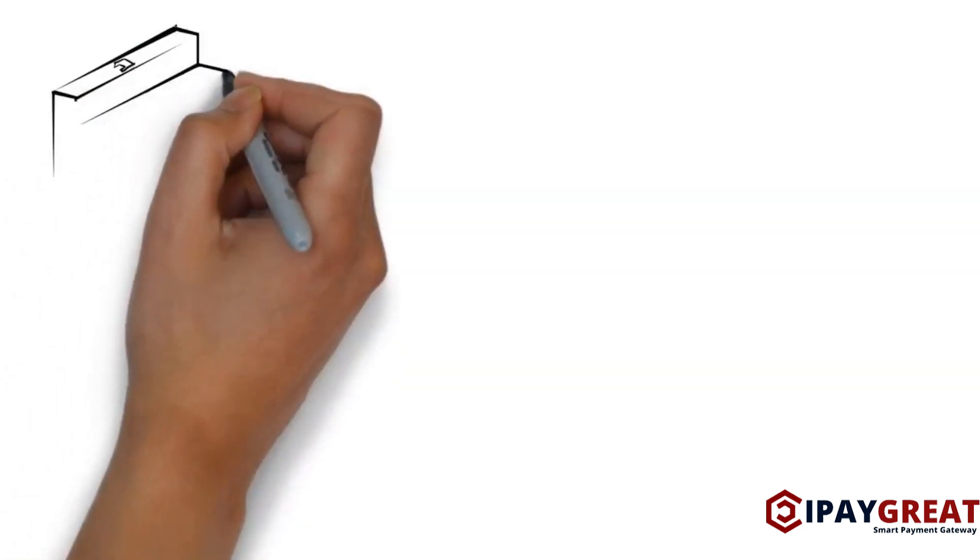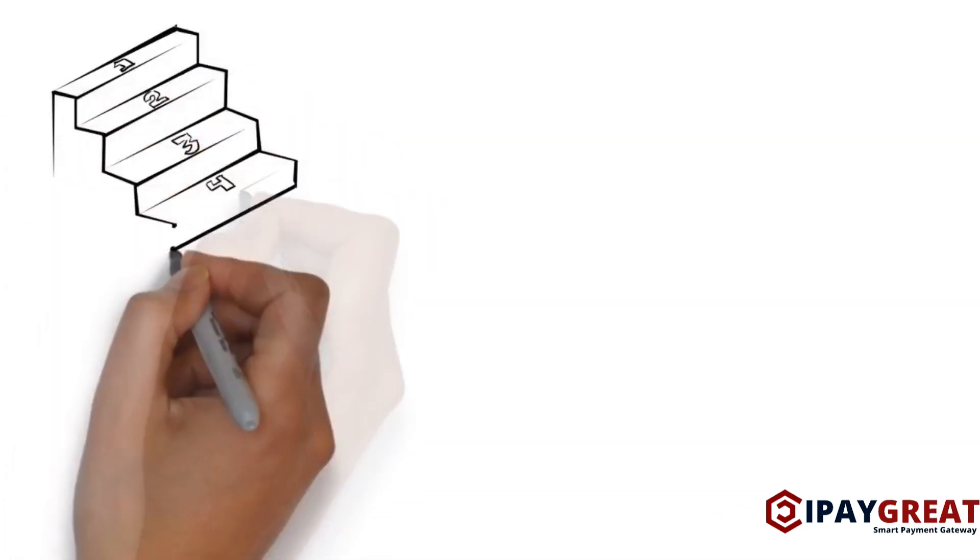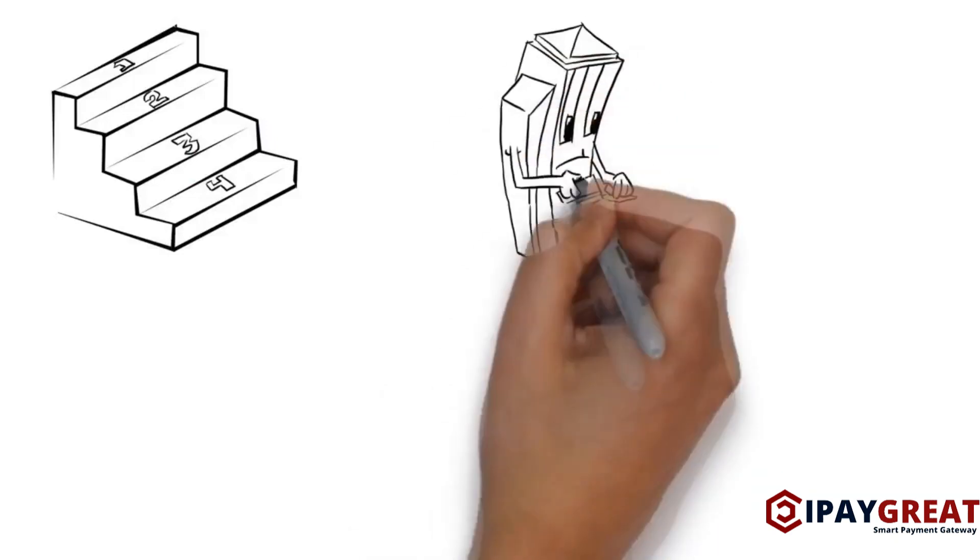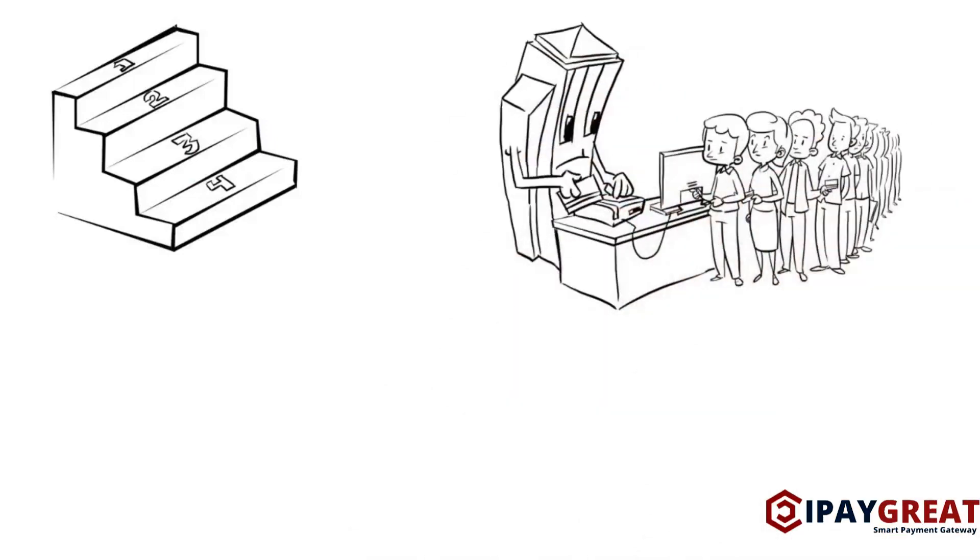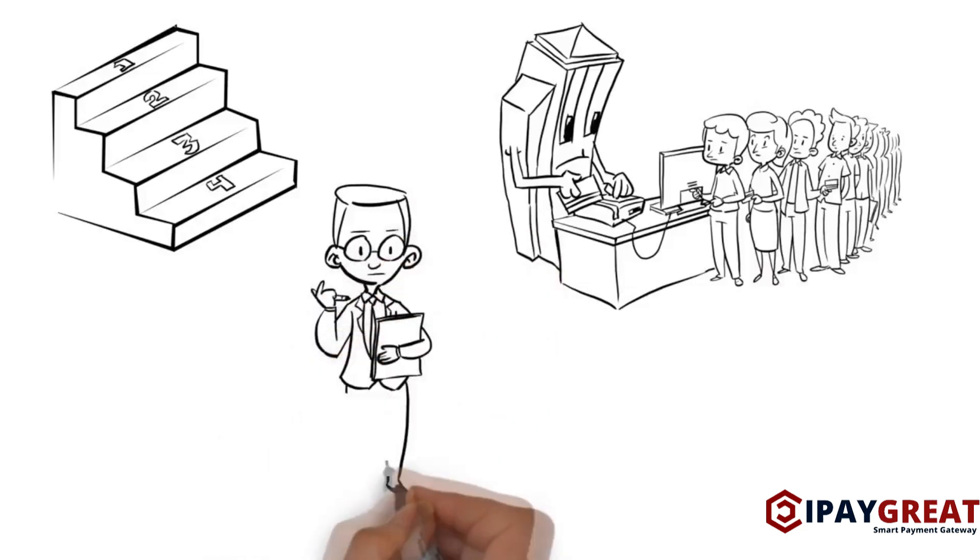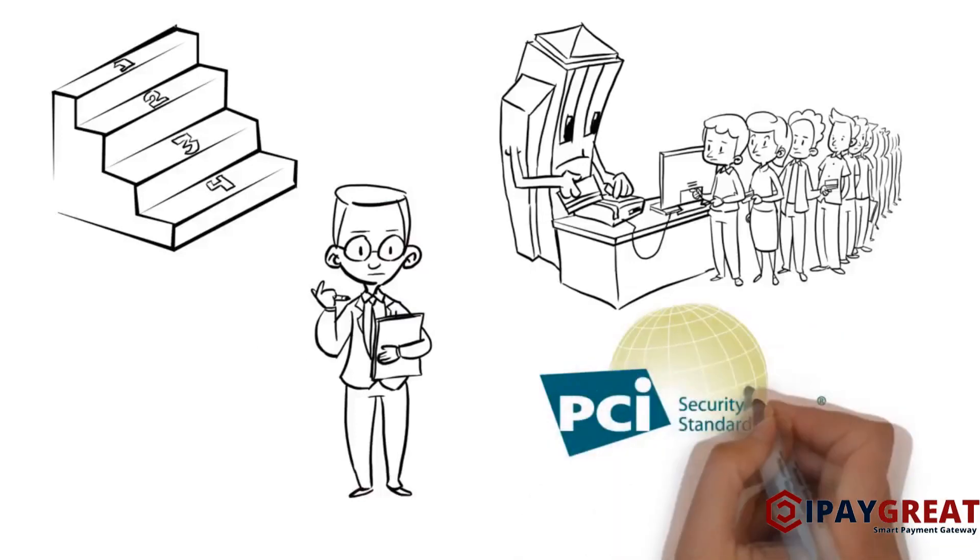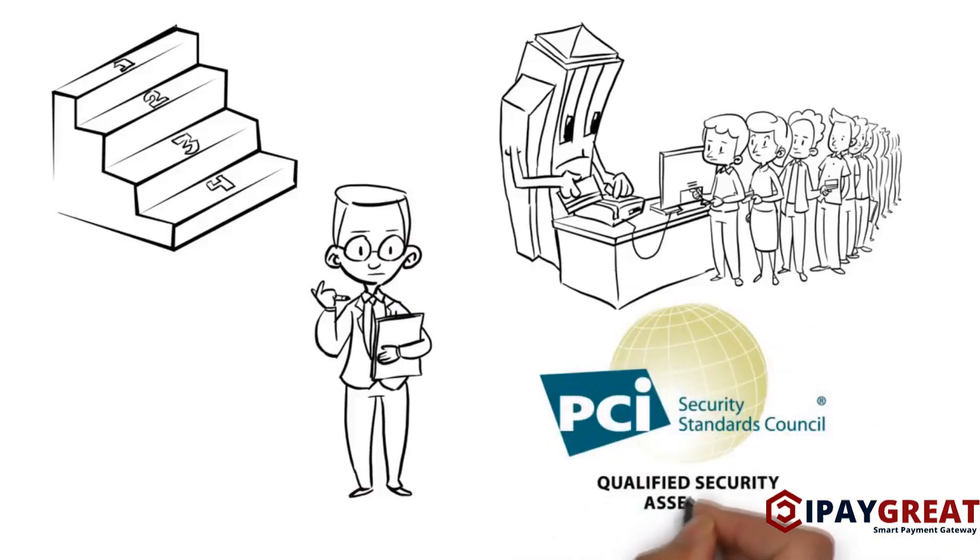Organizations are classified in one of four levels depending on the volume of payment card transactions they process. Level 1 includes the organizations with the largest volume. These organizations are required to undergo an independent annual security audit performed by a PCI certified company which has been previously certified by the council.